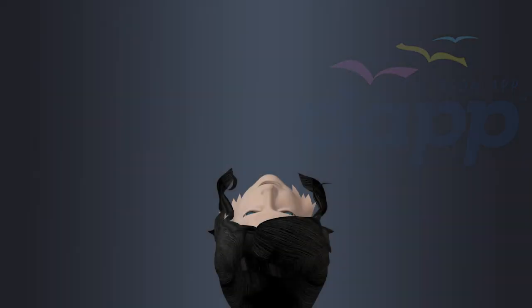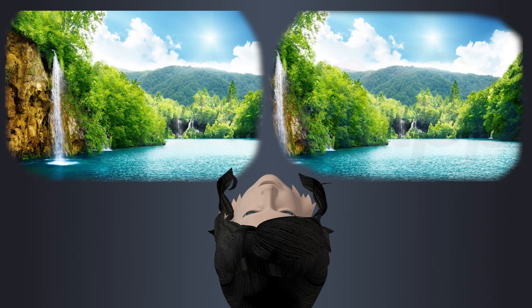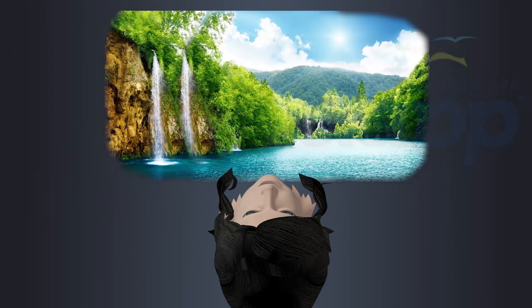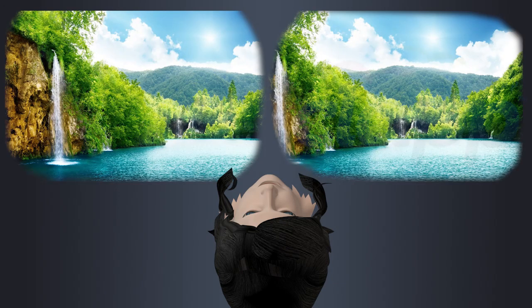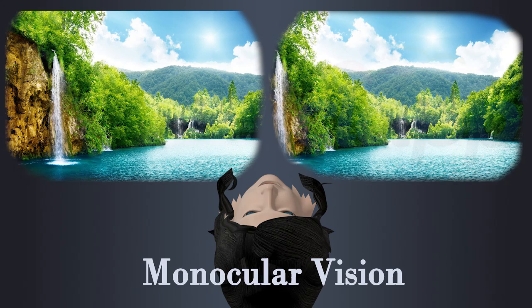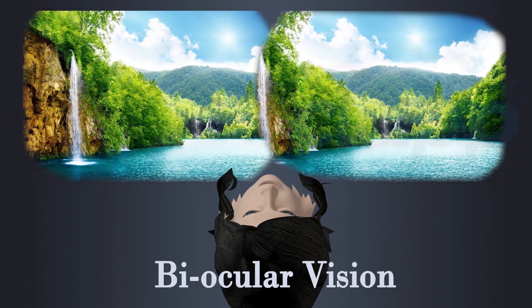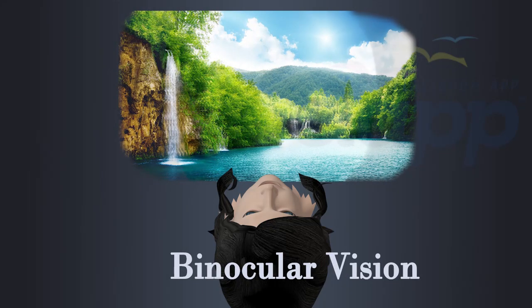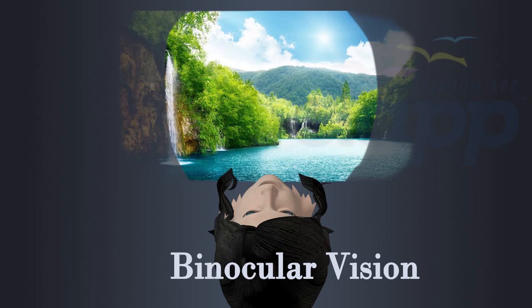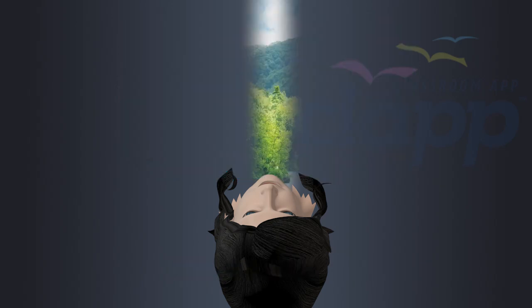Visual fields of eyes are classified into three types: monocular vision, biocular vision, and binocular vision. Monocular visual field is the visual field of a single eye. Biocular visual field is the visual field combined by both eyes. Binocular visual field is the coordinated or overlapped visual field of both eyes.